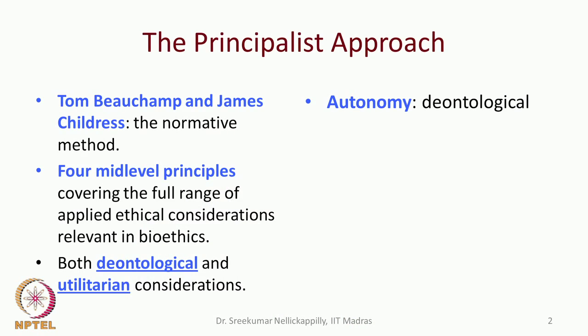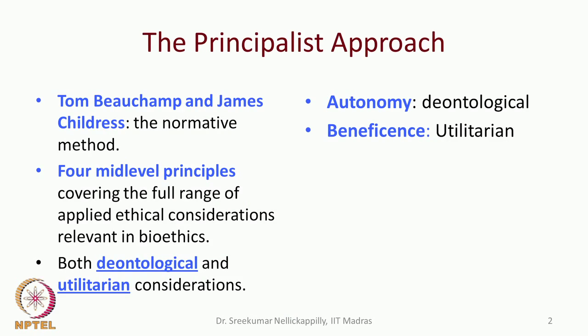These principles are derived from the dominant ethical traditions in the western world, particularly the post-Enlightenment western world — the two traditions of deontologism and utilitarianism. The principle of autonomy is derived from the Kantian deontological perspective, which gives great importance to the individual. One of the primary principles of Kantian deontologism is that you must treat every individual as an end in himself, not as a means to an end. Fundamental ideas of respect for persons and personal autonomy are derived from this Kantian principle. Beneficence, another very important principle in the principlist approach, is obviously utilitarian, as is non-maleficence.